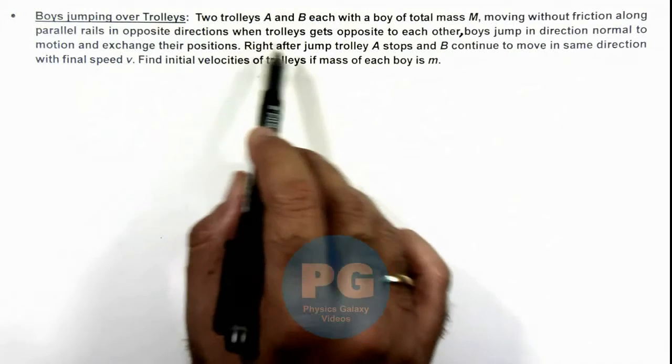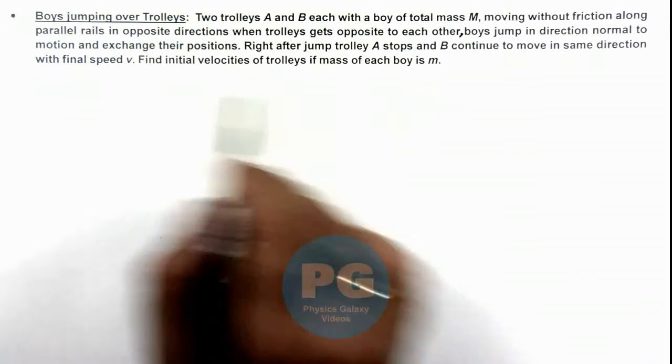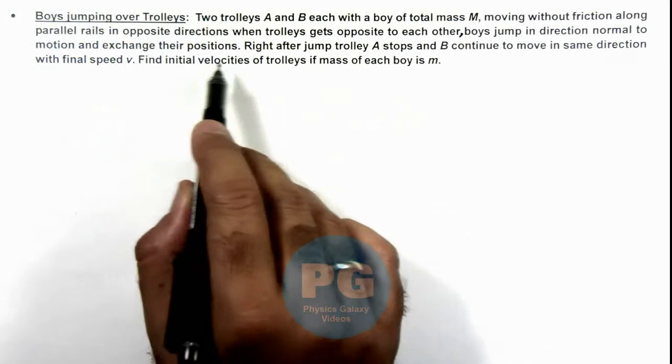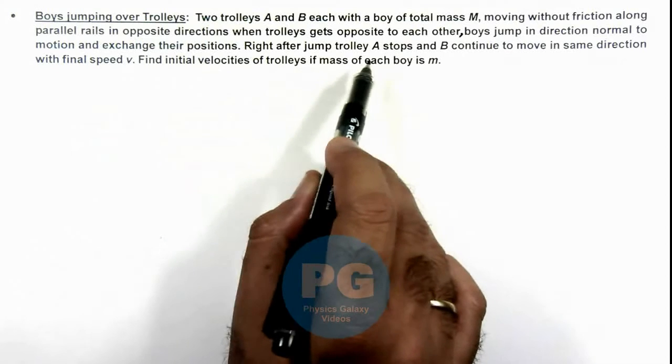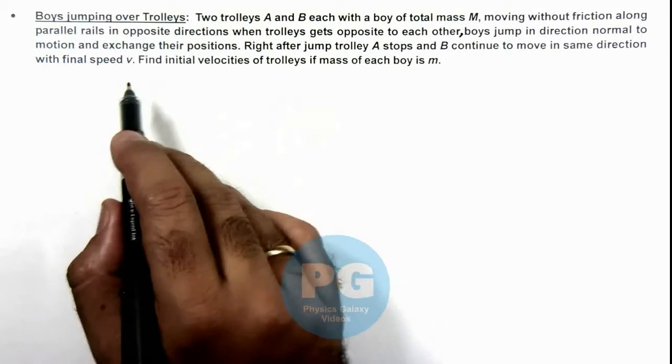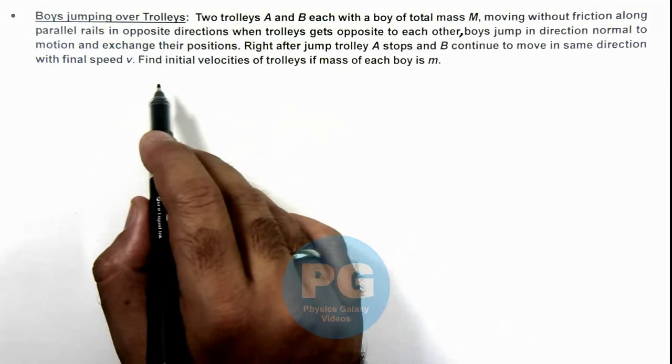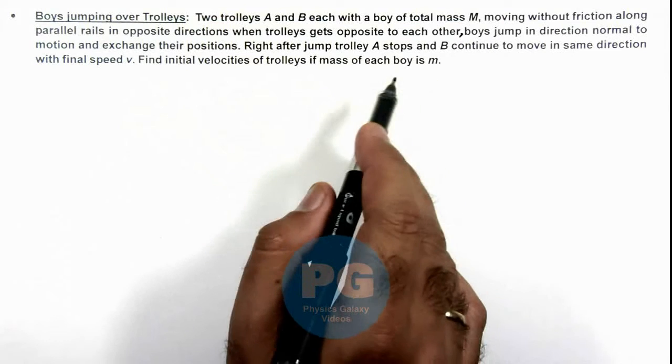When trolleys get opposite to each other, boys jump in direction normal to motion and exchange their positions. Right after jump, trolley A stops and B continues to move in same direction with final speed v. We are required to find initial velocities of trolleys if mass of each boy is m.